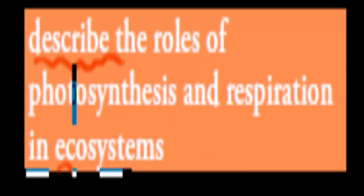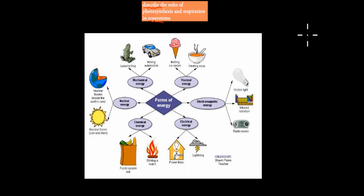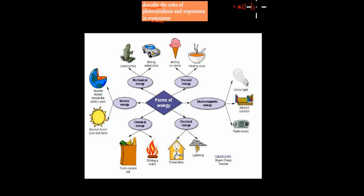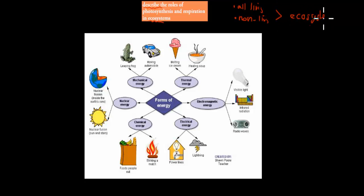First of all, what is an ecosystem? An ecosystem is just any area — for example, Sydney. Sydney is the ecosystem, and then all living and non-living things in that area make up our ecosystem. So the ecosystem is any area we choose, and all non-living and living things — abiotic and biotic factors — make up that ecosystem.